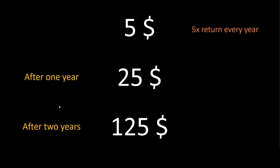To represent this concept in mathematics, you use something called an exponent. So exponent meaning: 5 raised to 2 is 25, and 5 raised to 3 is 125.